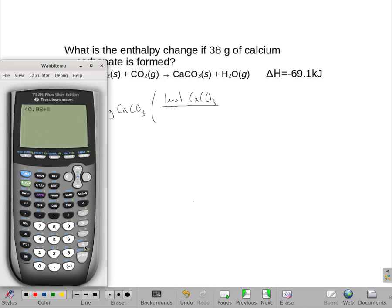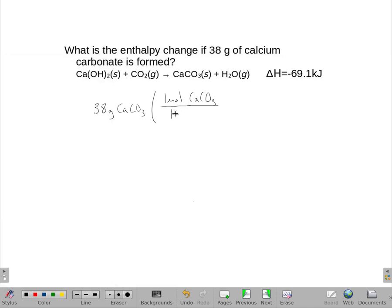We're going to add a single carbon to that and three oxygens. That's 16.00. So I get a molecular weight for calcium carbonate of 100.09 grams.